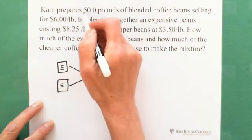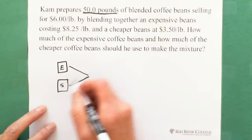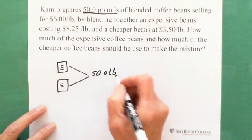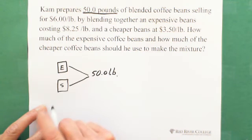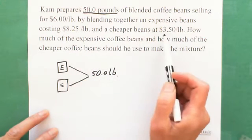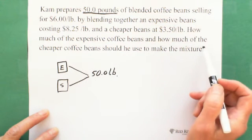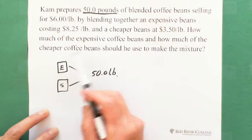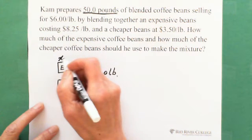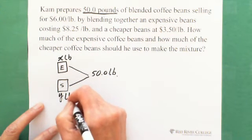The cheaper one is $3.50 per pound. So we don't know how much this one, we don't know how much cheaper one. But we know the total is 50 pounds. And also the expensive one is $8.25 per pound and cheaper one is $3.50 per pound. So what we can be looking for, how much for expensive or how much for cheaper. So let's say put this is the X pound. If you have X pound for expensive one, Y pound for cheaper one.